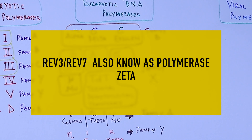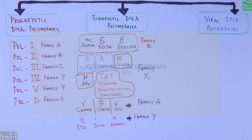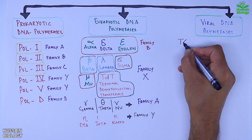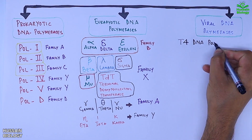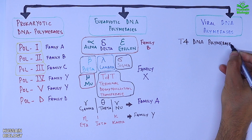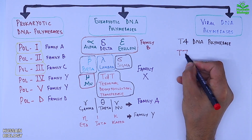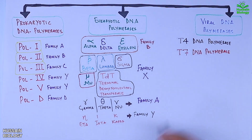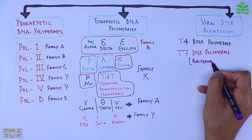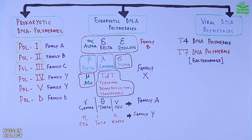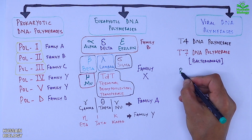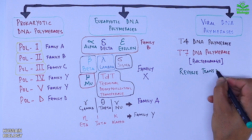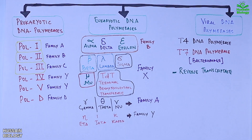Now getting to the viral DNA polymerases. First we have the T4 DNA polymerase and T7 DNA polymerase that are found in bacteriophages. We also have reverse transcriptase enzyme, which is an RNA-dependent DNA polymerase found in retroviruses.